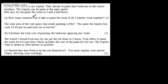This is question number five and it's a calculator question. We're told Bob, Bill and Ben are triplets. They decide to paint their bedroom in the school holidays. The triplets can all paint at the same speed. Bob says he can paint the room in four and a half hours. In part A, for two marks, the question asks: how many minutes will it take to paint the room if all three triplets work together?